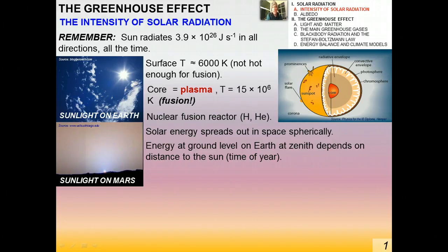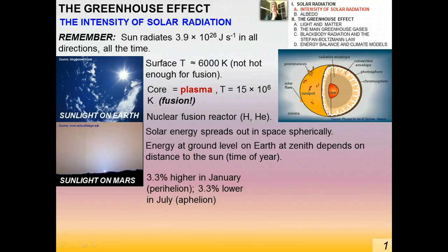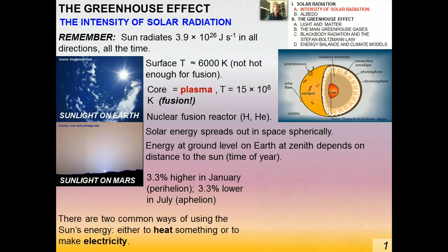The energy at ground level on Earth when the Sun is directly overhead depends on the distance to the Sun and many other things in terms of how much solar insolation — incoming radiation — is actually absorbed. In January, the Earth is closer to the Sun (perihelion) and insolation is about 3.3% higher; in July it's about 3.3% lower. Many people in the northern hemisphere assume we're closer to the Sun in summer, but the distance makes very little difference in absorbed insolation.